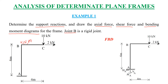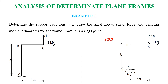Joint B is a rigid joint, meaning it will have three reactions: shear force V, normal force N, and moment M. If it were a pin or hinge joint, it would have only two reactions and the moment would be zero. To solve this, we first draw the free body diagram showing reactions at each support, loads, and member lengths.